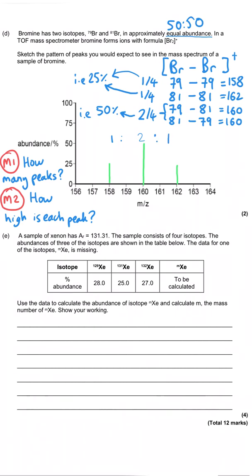And then the final part of this question has got a relative atomic mass calculation. So we're told that xenon has a relative atomic mass of 131.31. Sometimes that's our goal, actually, to work out the relative atomic mass. But we're told what the answer is. And then we're told that we've got four isotopes for xenon. And the abundance of three of the isotopes are shown in the table below.